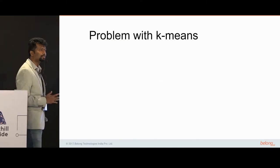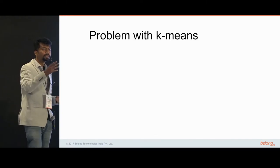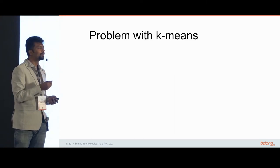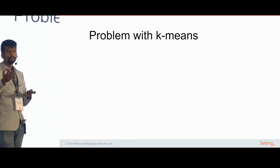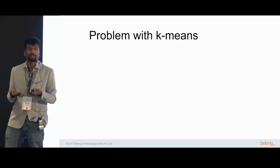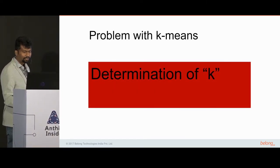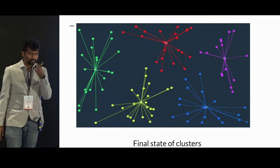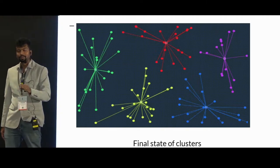But what is the problem with K-means? You need to know K, and you choose some value of K that may or may not be right. The determination of K is always a challenge with K-means. So how can we try to cluster these points without knowing K, and how can we use the sampling concepts we just learned to solve this problem?